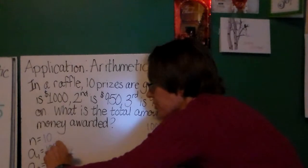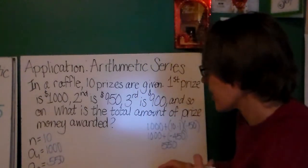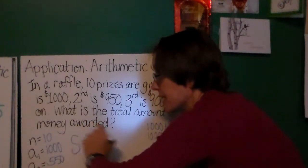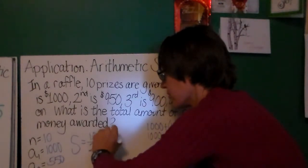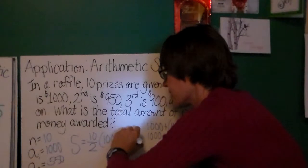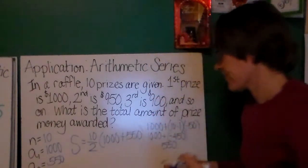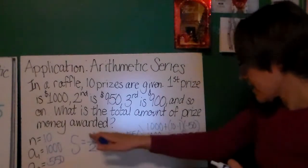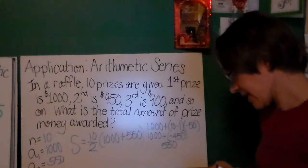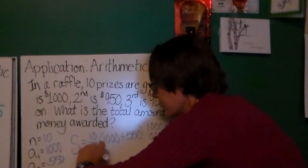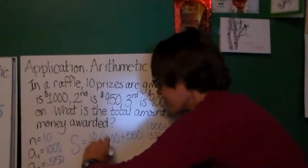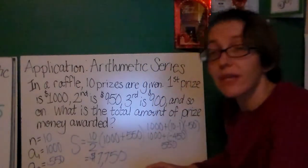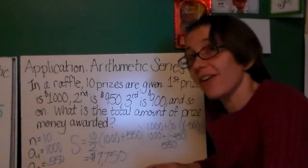Boy, I should try winning some of these raffles that I read about in these word problems. So, my total amount of prize money awarded, n is 10, 10 divided by 2, $1,000 plus $550. So, $1,000 plus $550 is 1,550. So, I'll multiply that together. And overall, it will be a total of $7,750 in prizes for this raffle. And that's your application problem for the arithmetic series.